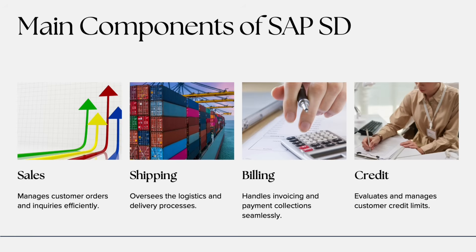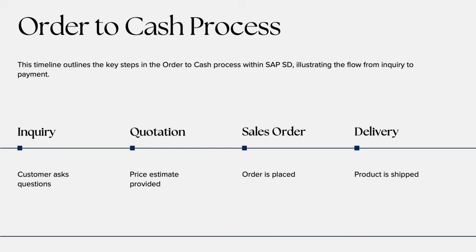Component six is Partner Functions — this part identifies everyone involved in a transaction, like sold-to party, ship-to party, bill-to party, and payer. Together, these components make SAP SD a complete solution for handling sales, from the first customer inquiry to the final payment.